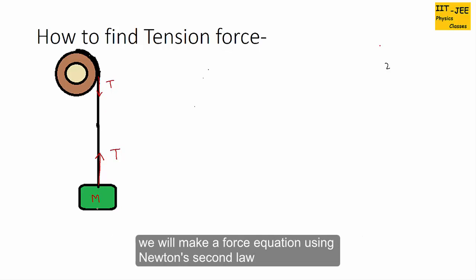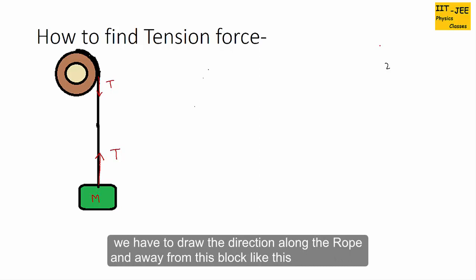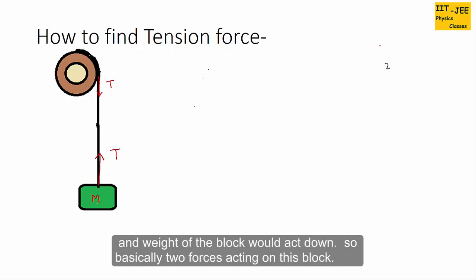We will make a force equation using Newton's second law, so we need to draw forces acting on this block. Tension force is acting upward along the rope and away from the block. Weight of the block acts downward. So basically two forces are acting on this block.